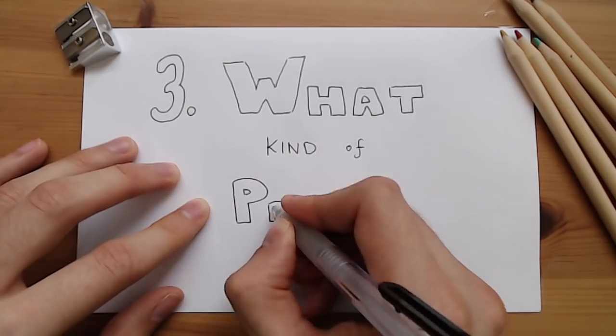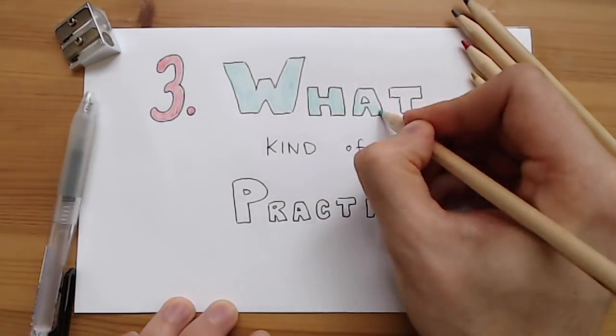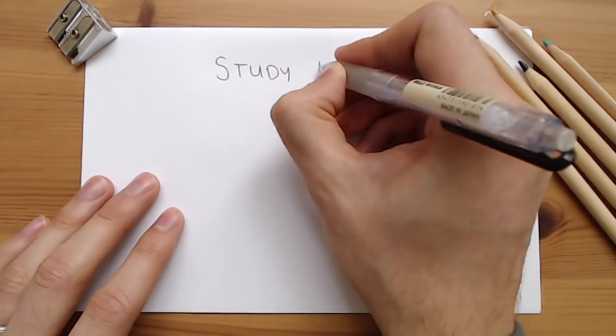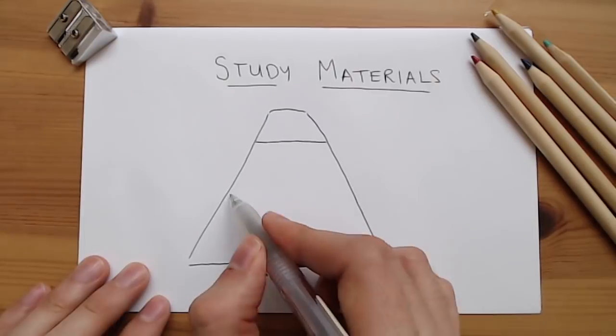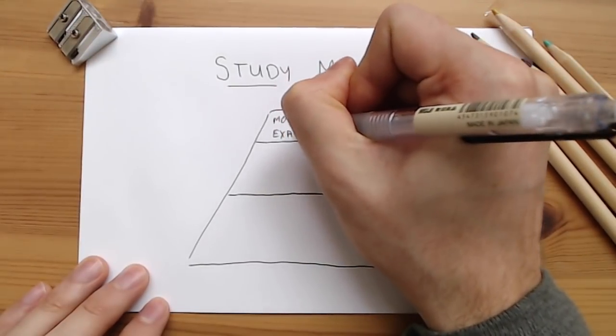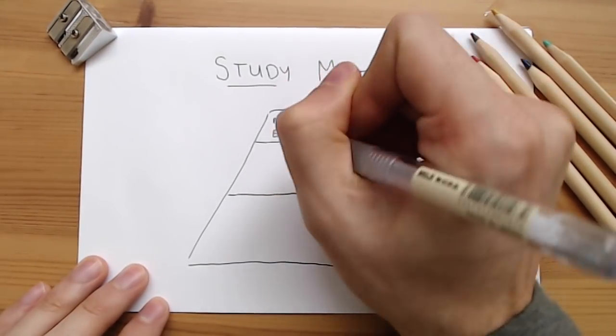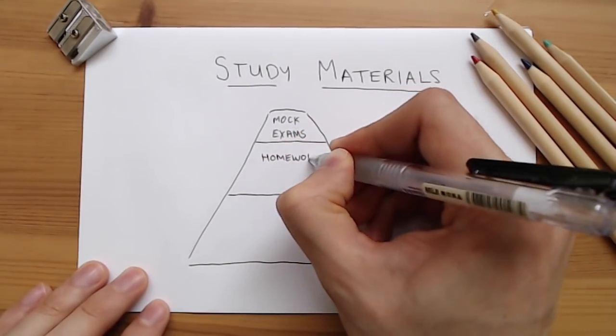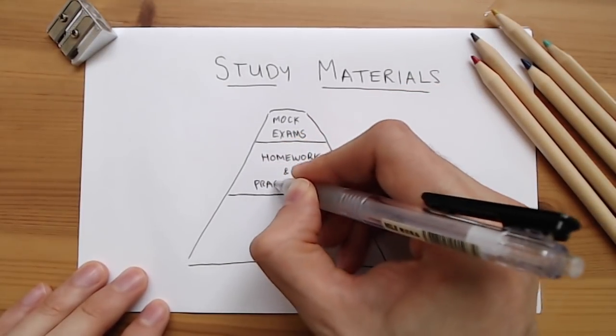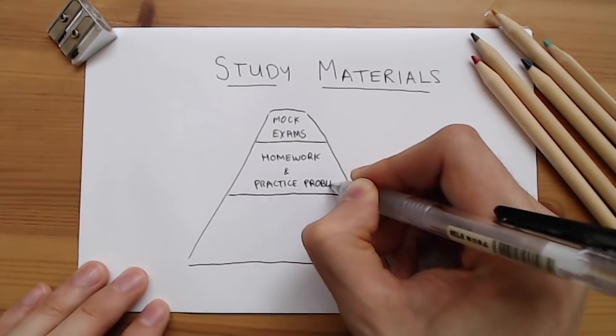So the third step is to figure out what kind of practice to do. I like to think that there's a strict hierarchy of what kinds of study materials will be the most useful to you in preparing for your eventual exam. The most valuable are mock tests and exams, which are intended to be identical in style and form to the tests you're actually going to take. Next are problems given in homework assignments, textbook questions, or quizzes that are given for your class specifically.